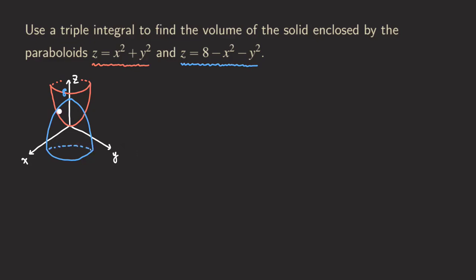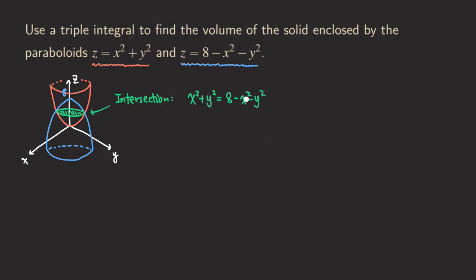They do intersect, and we need to figure out the intersection first before continuing, because that will give us the projection. The intersection is between those two surfaces, so we can set them equal to each other — since z is already isolated, that makes the calculation easy. So we have x squared plus y squared equals 8 minus x squared minus y squared. Moving terms over, we get 2x squared plus 2y squared equals 8, and dividing both sides by 2 gives x squared plus y squared equals 4.